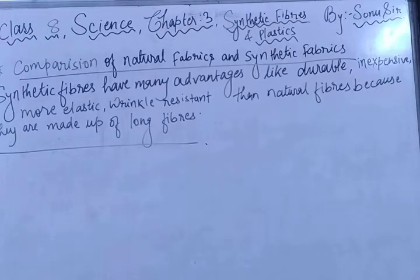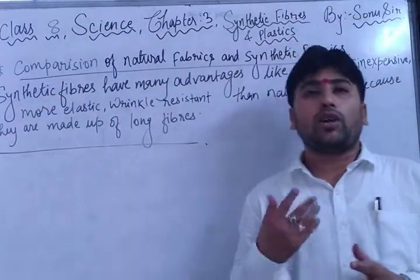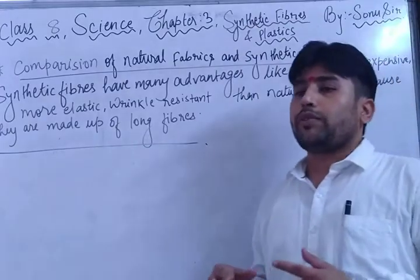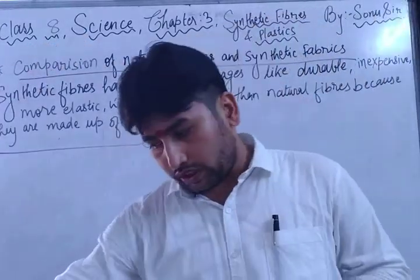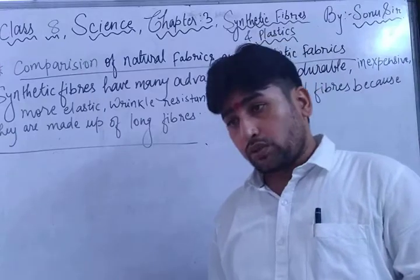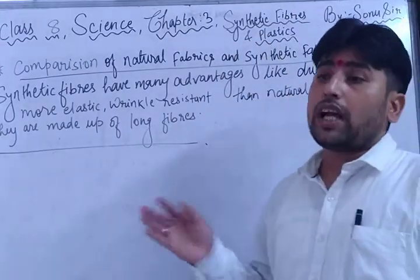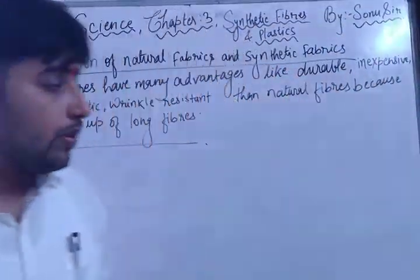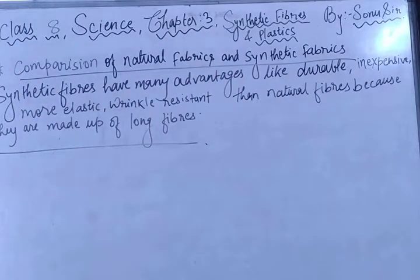Calculate the percentage absorption. First, take different types of fabrics — cotton, synthetic, rayon, nylon, polyester, whatever fabrics you have. Before dipping them in water, note the initial weight of each fabric. After dipping into water, take them out and measure the weight on the weighing balance again to get the weight of the absorbed water. The formula is: percentage absorption = (final weight − initial weight) ÷ initial weight × 100.